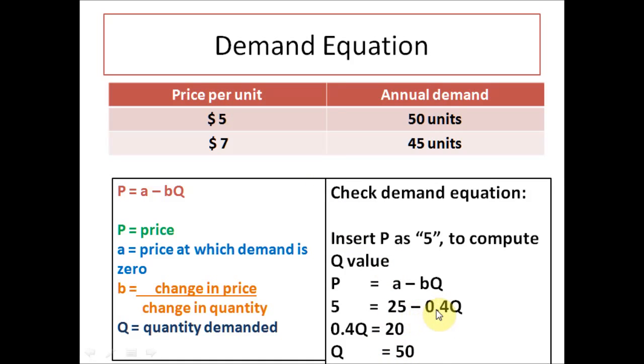So what you would do is bring 0.04Q on the other side of the equal sign and bring 5 on the right side of the equal sign. So 0.04Q equals 25 minus 5 is 20. And then in order to get Q, you would take 20 divided by 0.04 to get Q equals 50.